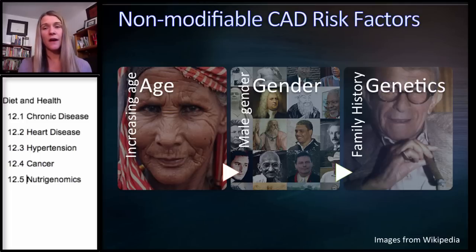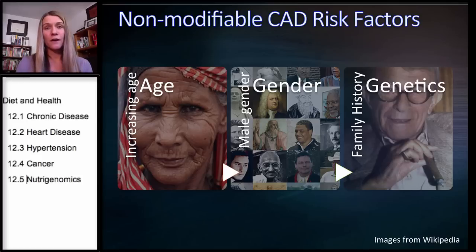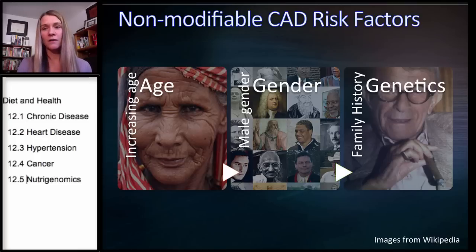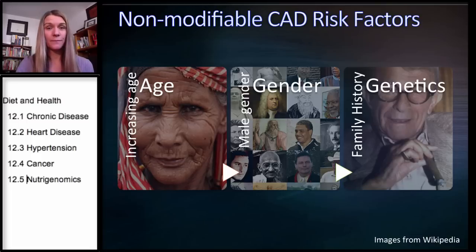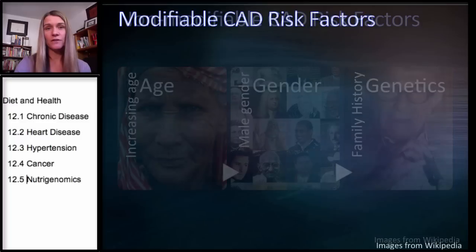A good example of genetics is George Burns — he smoked cigars, didn't eat well, wasn't really active, yet lived to be over 100. So genetics protected him from heart disease, while some other individuals might have the opposite genetic predisposition. These are things we simply can't change.